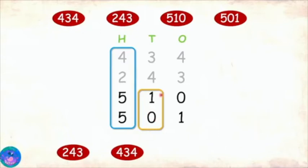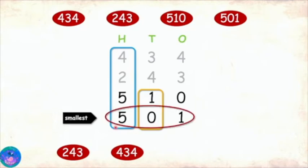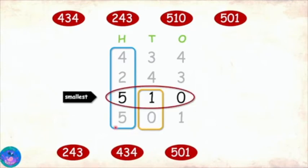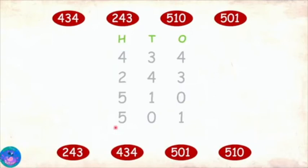Now in tens place we have 1 and 0. 0 is the smallest. So that means 501 is the next smallest which I am writing down. And now we are left with only one number. Well, we can say that is the smallest: 510.